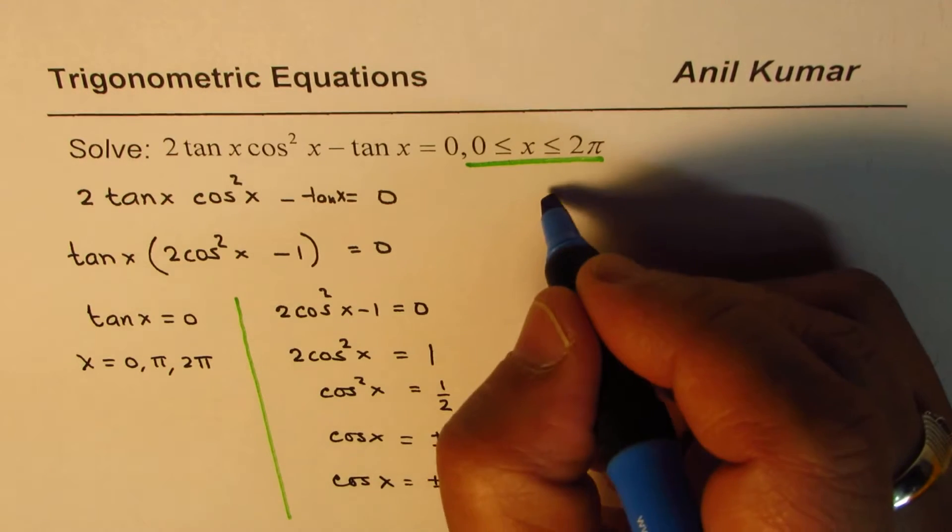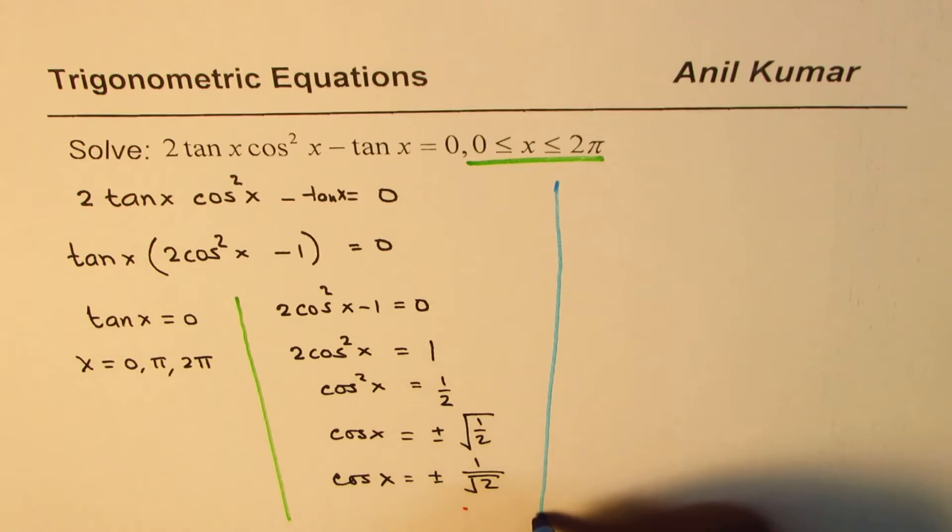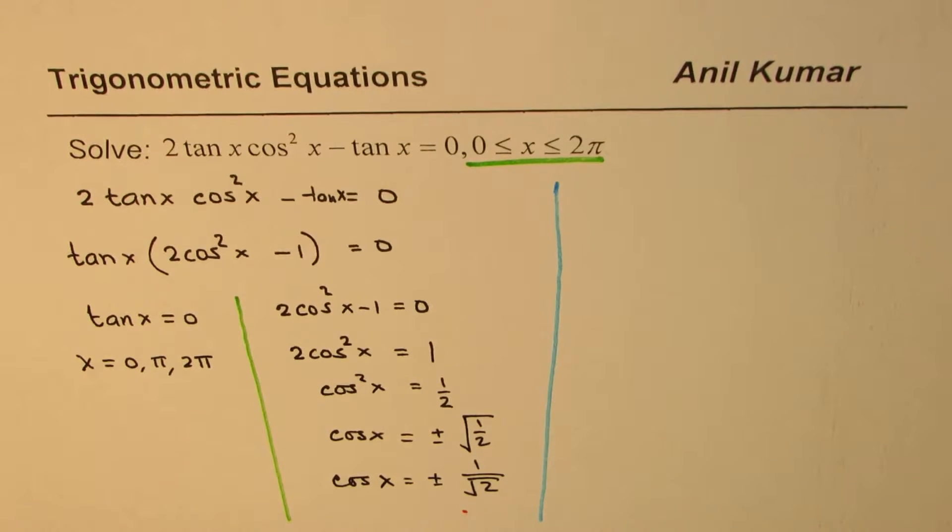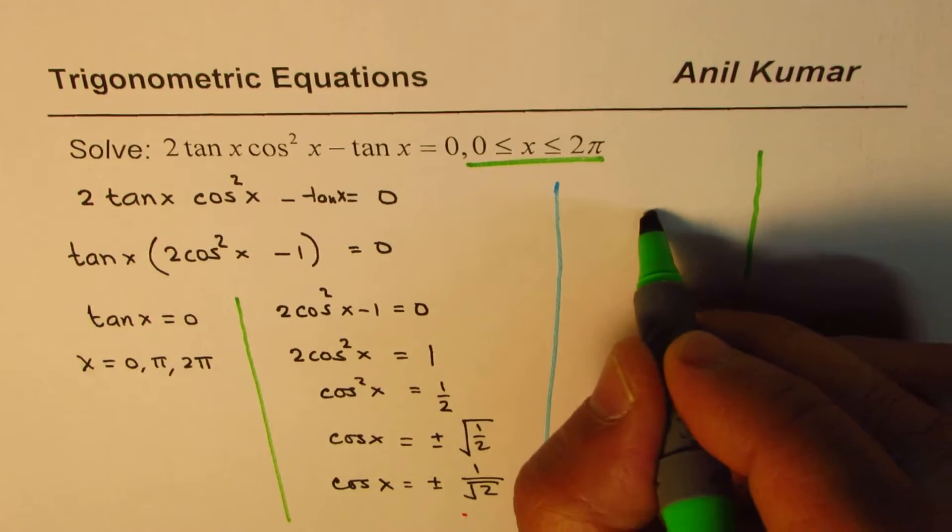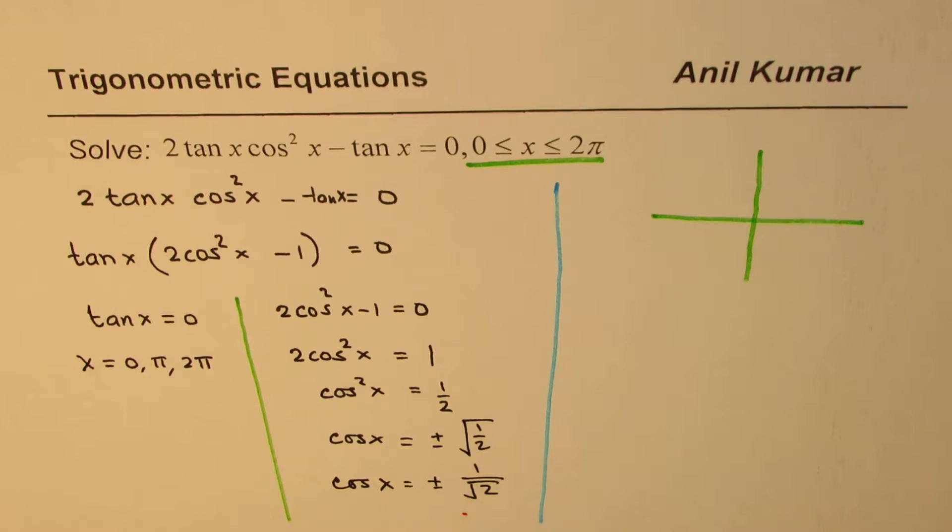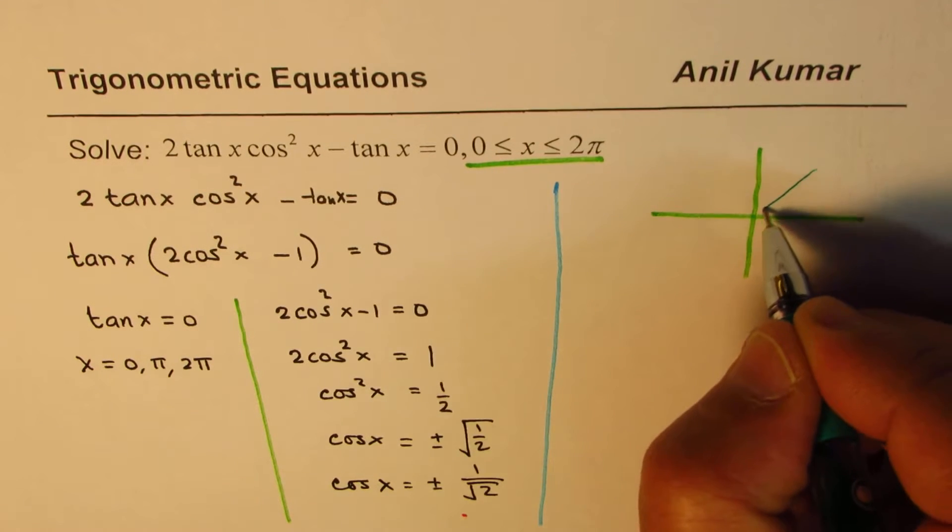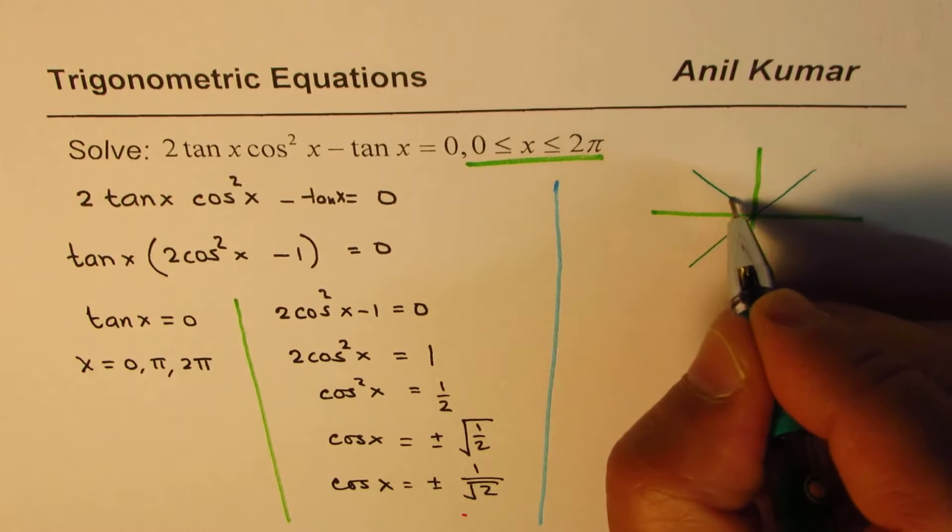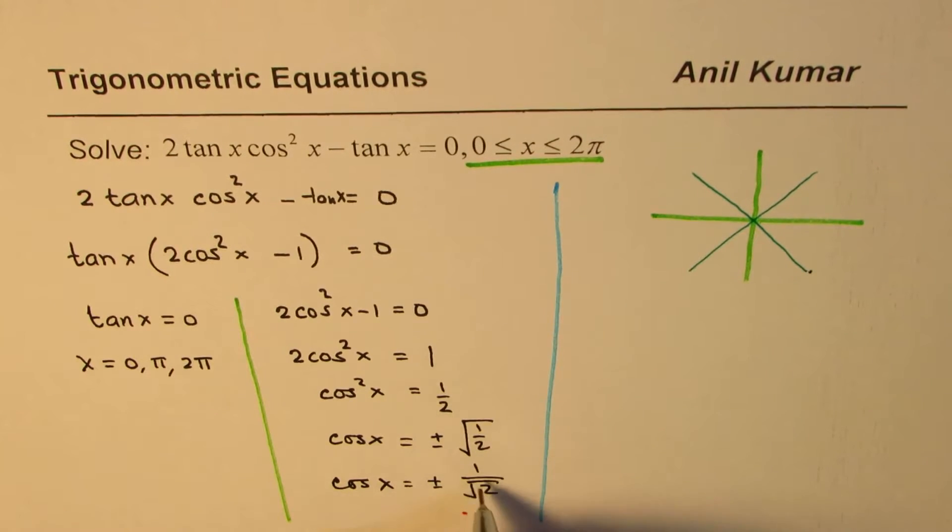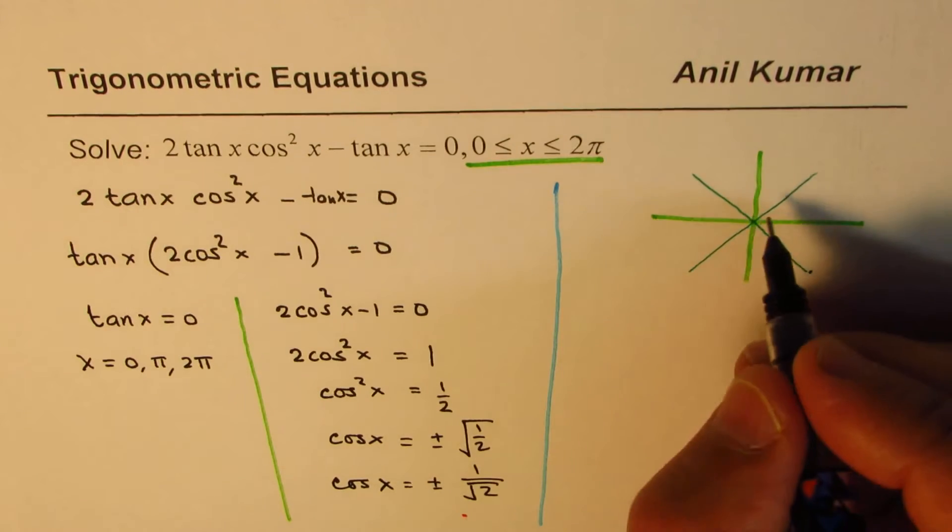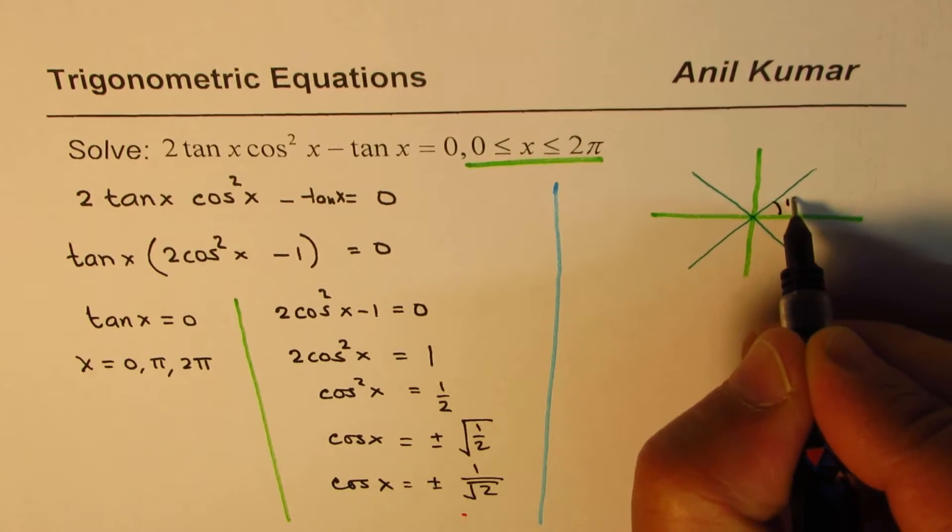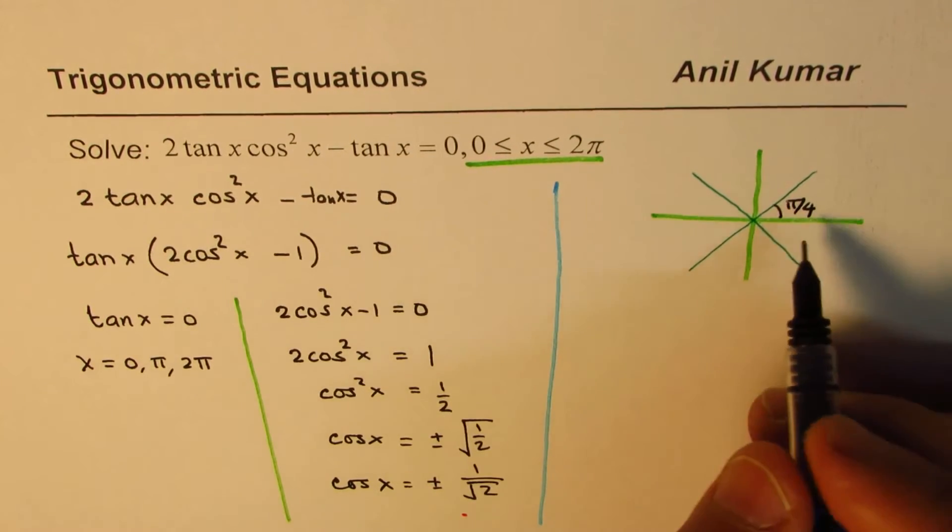Let's look into the coordinate plane. We're looking for plus and minus, which means within 0 to 2π there are four solutions, one in each quadrant. When is cos equal to 1/√2? It is π/4.